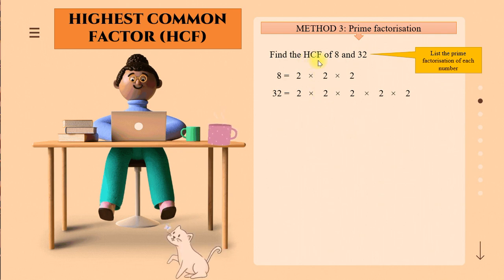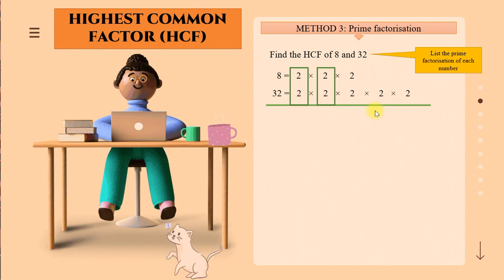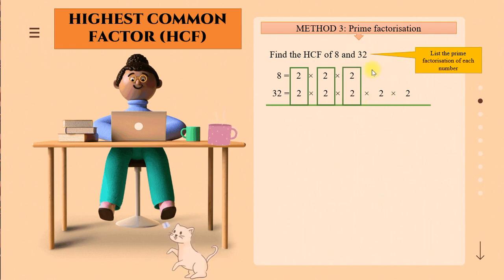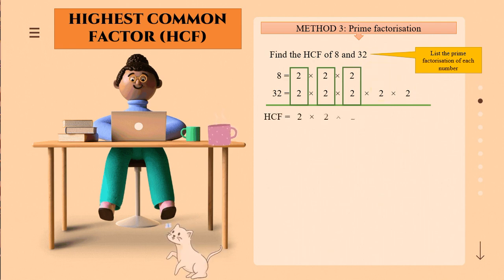From here, we want to find the HCF. We look for the same prime factors that appear in both numbers. 8 has three 2s, and 32 has five 2s. We match up the pairs: three 2s pair with three of the five 2s in 32. The remaining two 2s in 32 have no pair, so we leave them out. Our HCF is 2 times 2 times 2, which equals 8.